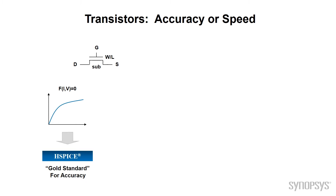We're going to get started by looking at how other simulators model the transistor — at a very high level, not looking at BSIM-4 or compact device models. The most common simulators are SPICE-accurate, such as HSPICE from Synopsys. They use a very accurate but slow device model, good for hundreds, maybe tens of thousands of devices. It uses a full IV curve and a large signal model.